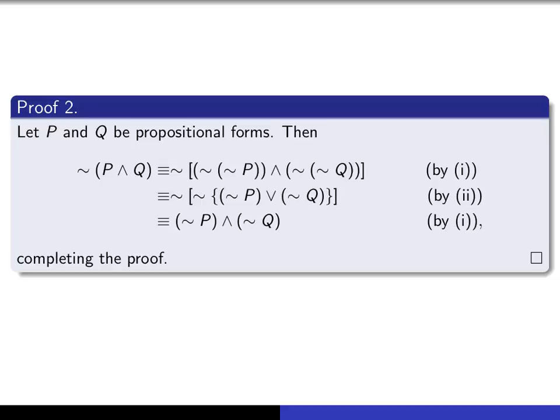So, here's the proof. Let P and Q be propositional forms. Then, I start with this. So, this is the left-hand side of the thing that I want to prove.